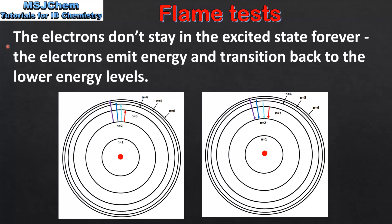However, the electrons don't stay in the excited state forever. The electrons emit energy and transition back to the lower energy levels. On the right we can see that the electrons transition from higher to lower energy levels. When they do this they emit energy. To summarize, when electrons absorb energy they transition to higher energy levels, and when they emit energy they transition to lower energy levels.